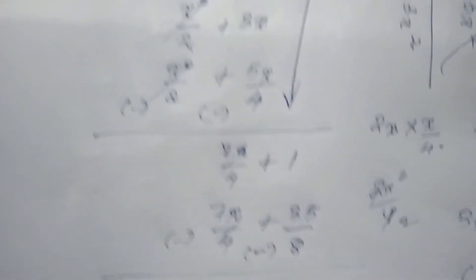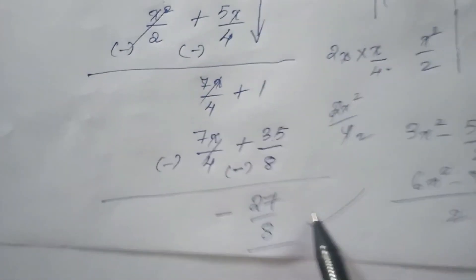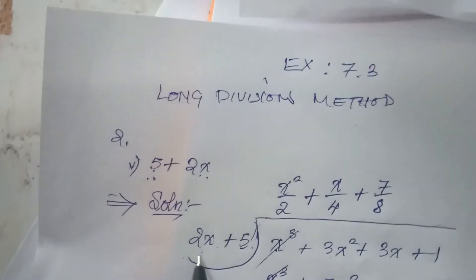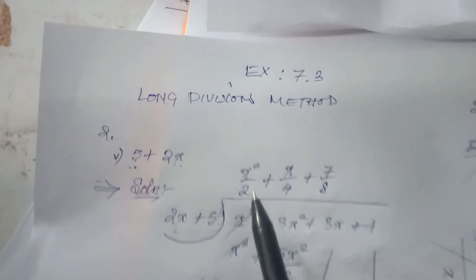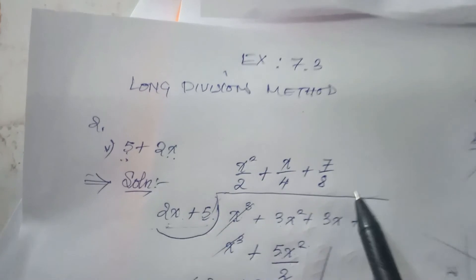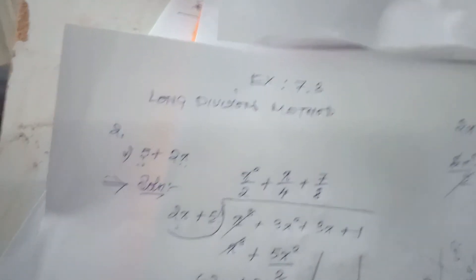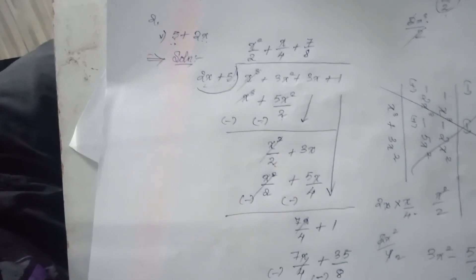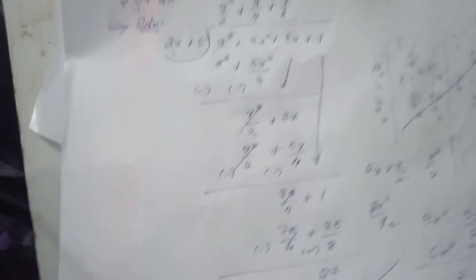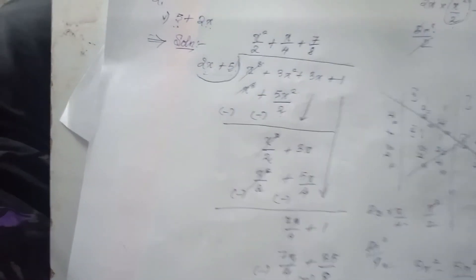Section 1 minus 2. The answer is minus. Advisor: 2x plus 5. The quotient is x squared by 2 plus x by 4 plus 7 by 8. Don't look at it that way. Using the long division method for Exercise 9B.